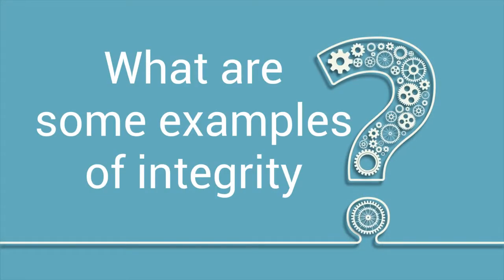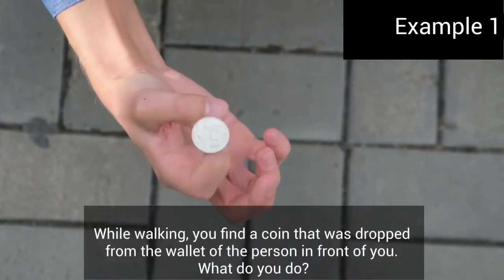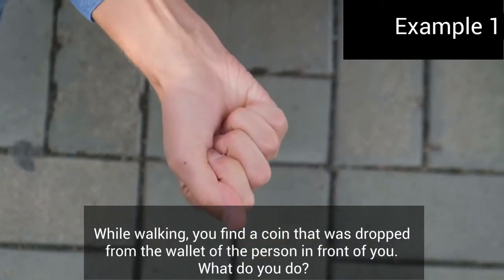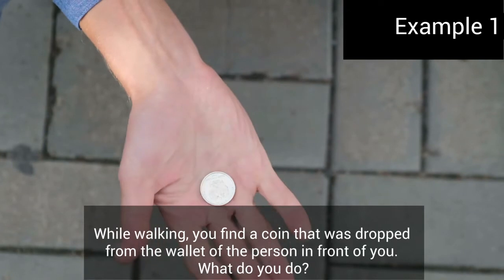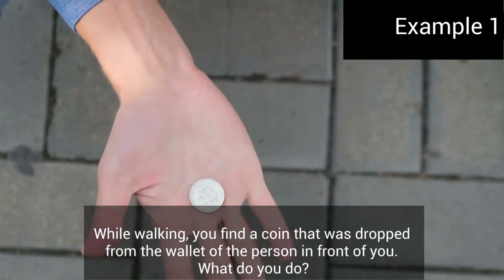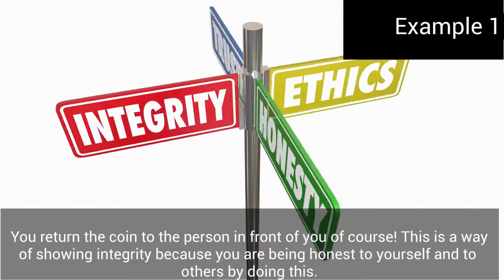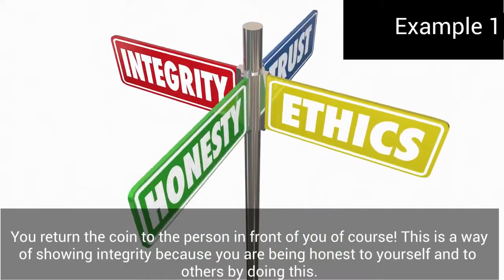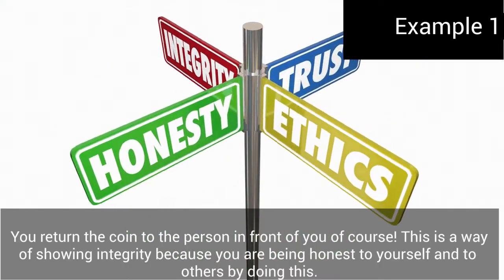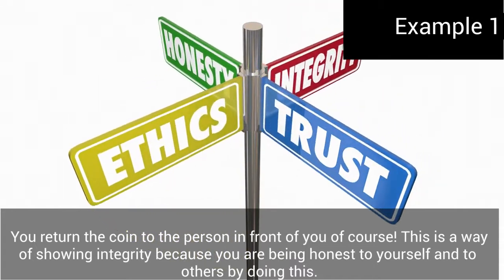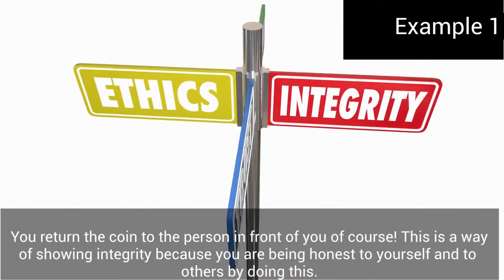What are some examples of integrity? While walking, you find a coin that was dropped from the wallet of the person in front of you. What do you do? You return the coin to the person in front of you, of course. This is a way of showing integrity because you are being honest to yourself and to others by doing this.